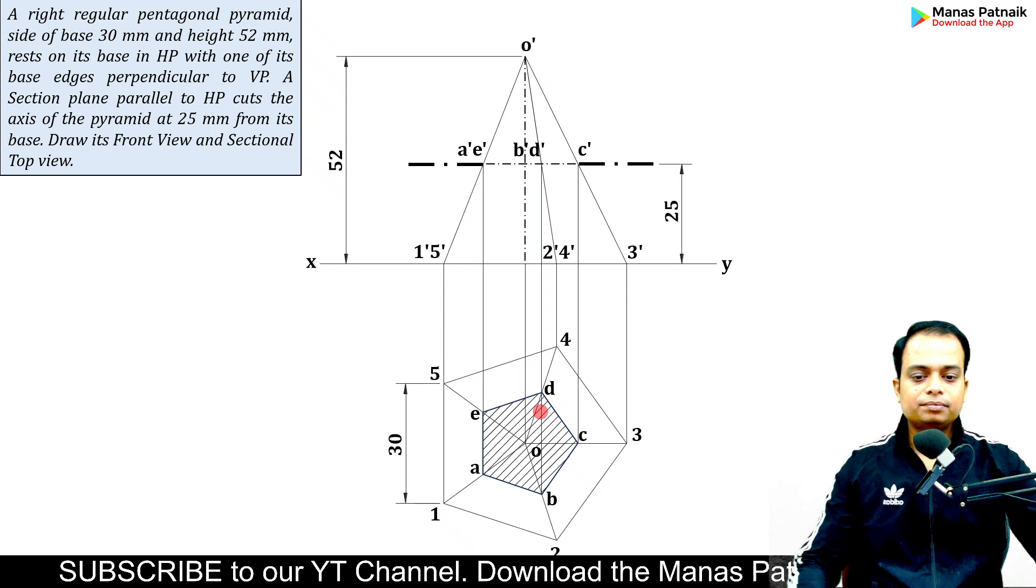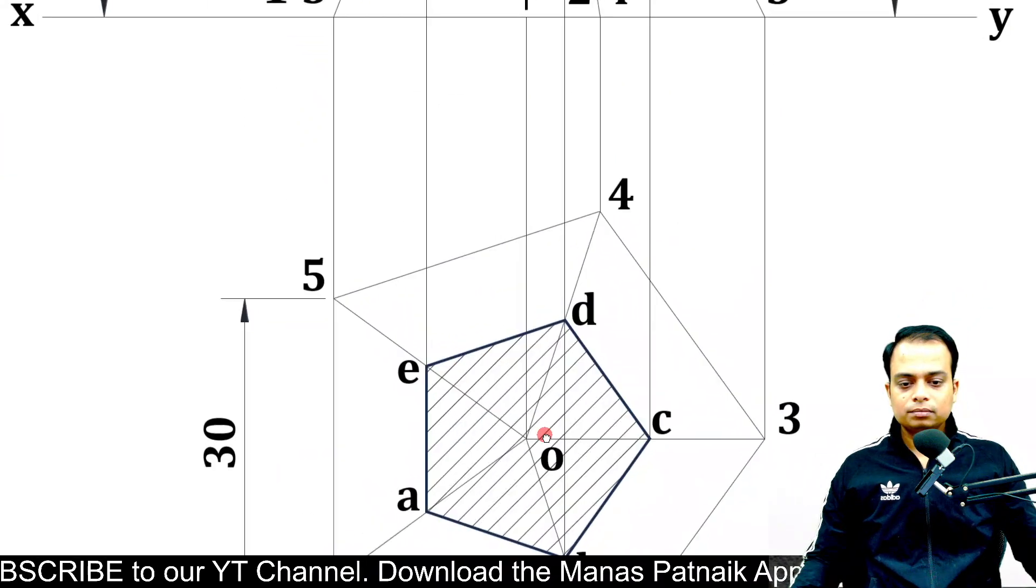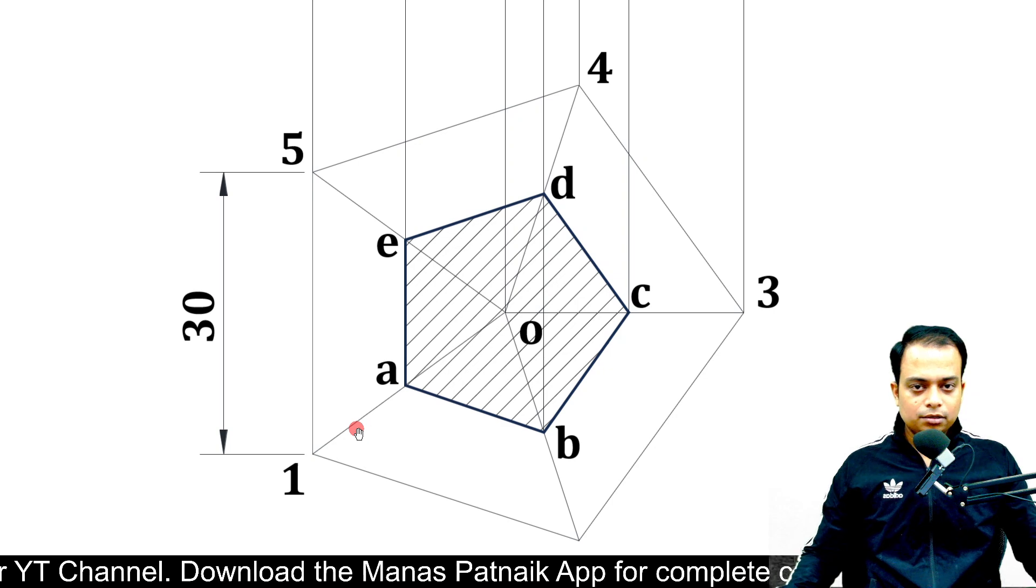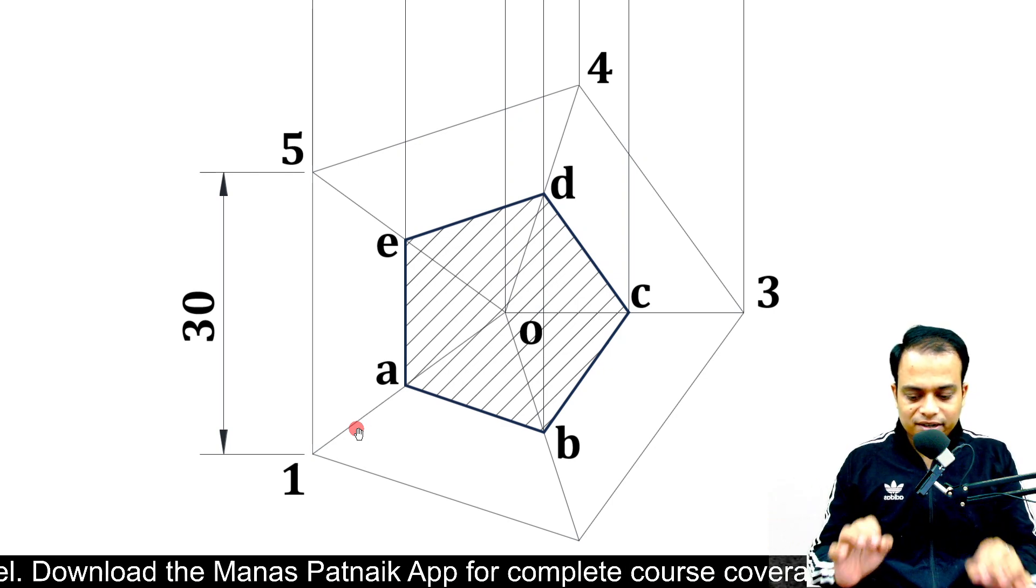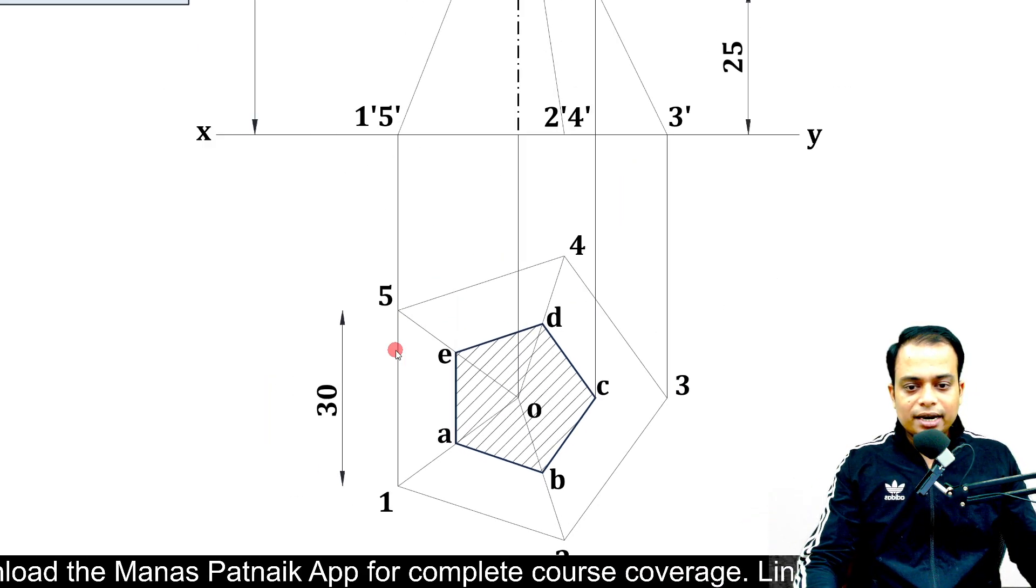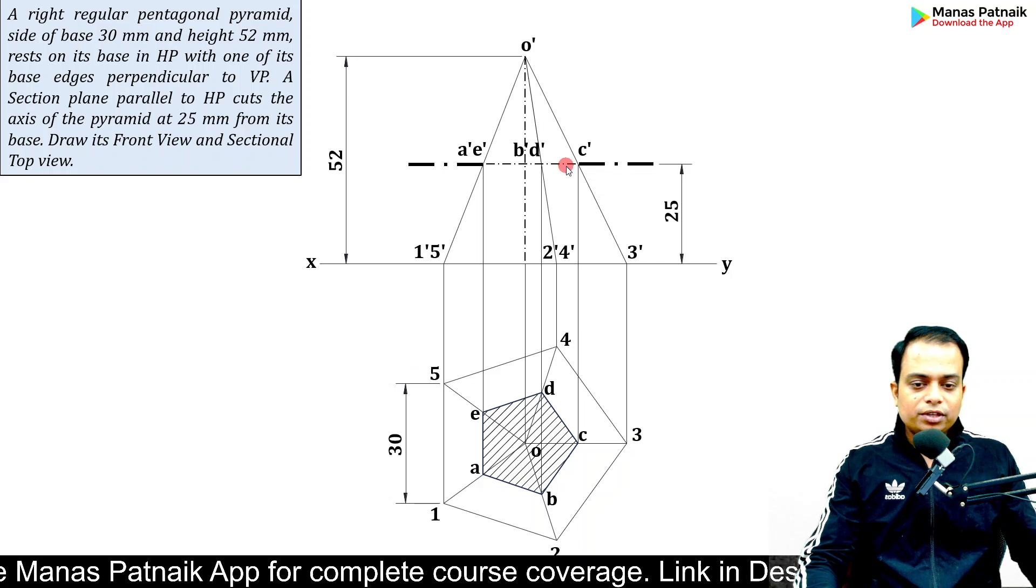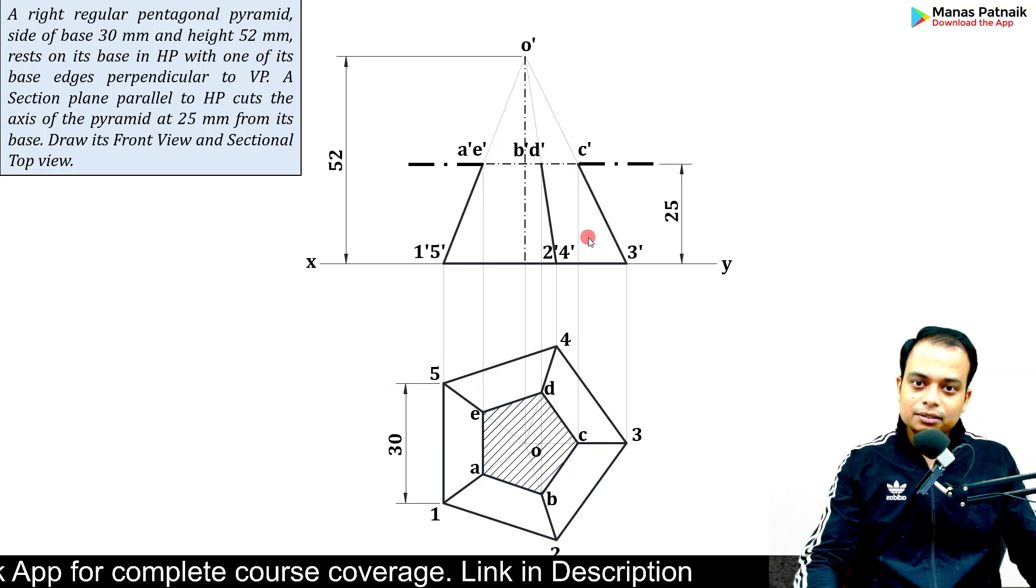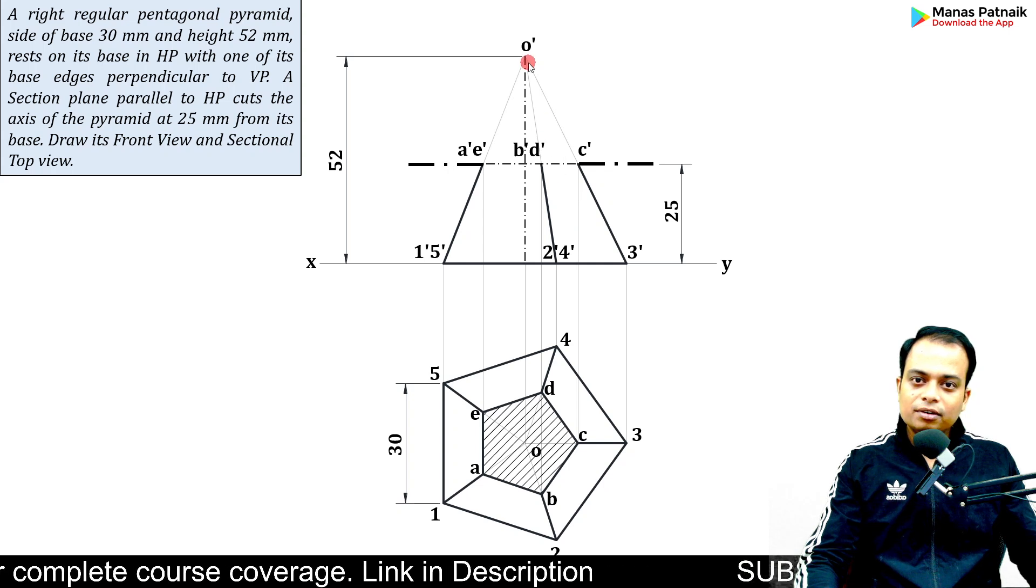This is the hatch. Let me zoom on this. The shading portion is left slightly. As I promised, the portion of the solid below the cutting plane has to be darkened like this, and the above portion, keep it light.